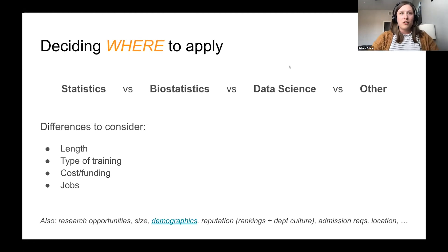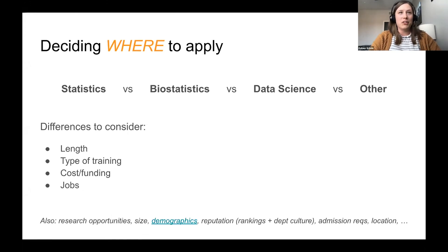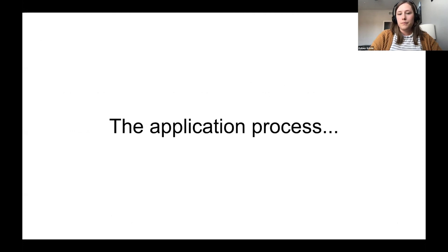There are lots of other things to think about as you evaluate programs: what types of research opportunities are available, how big the program is, the demographics of the students, reputation, admission requirements, and location — because this is where you'll be living for many years. All of these things are important to consider. That's a brief overview, so let's talk a little bit about the application process.